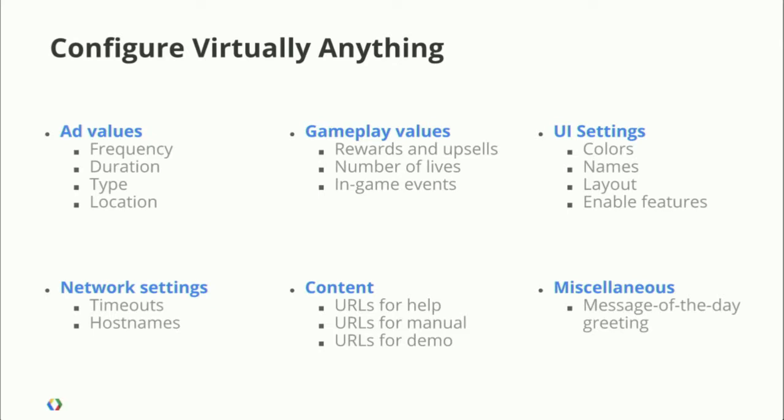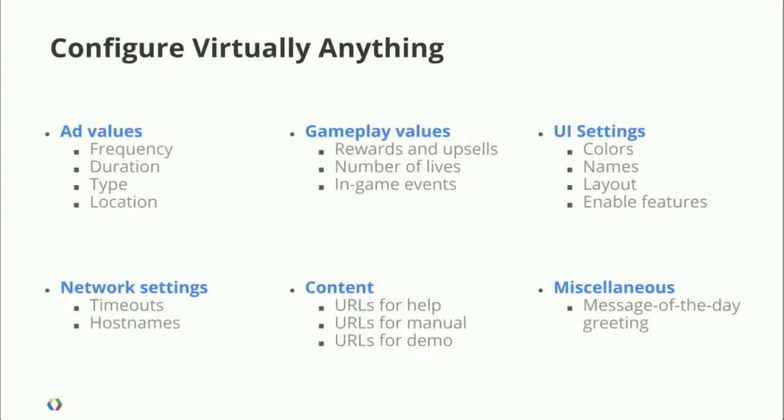So what are the sorts of things you might want to configure? You've got to write your application so that it is highly configurable. If you've got things like how often you want to show an ad, where you want to show an ad, a host you need to talk to on a back end, a timeout for talking to that host, or in a game how many points you get when you kill a bad guy, any URLs for help — all of that's configurable. You just need to make sure your application has an API call to get that value. You pass in a string, you get back a value, and GTM for mobile apps ensures you're always getting the latest and greatest value, not what's just locked into the application.